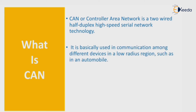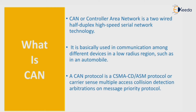CAN is basically used in communication among different devices in a low-radius region, such as in an automobile. CAN protocol is CSMA/CD — Carrier Sense Multiple Access with Collision Detection — with attribution on message priority.